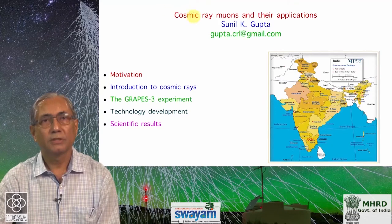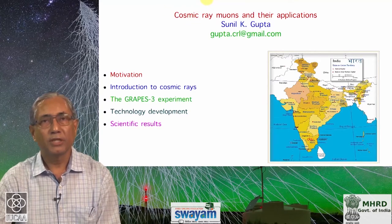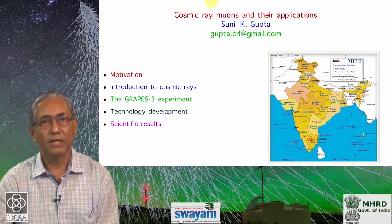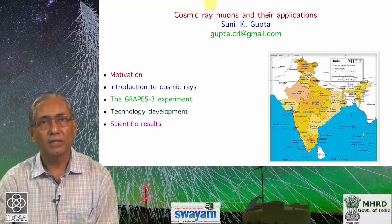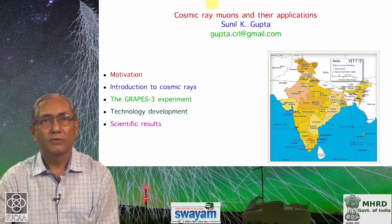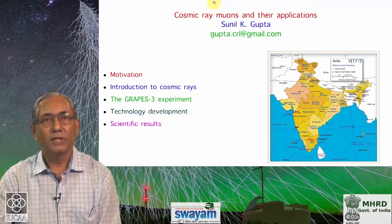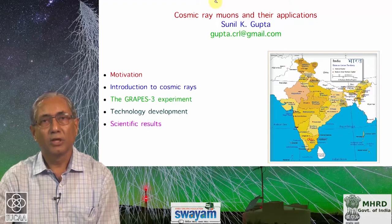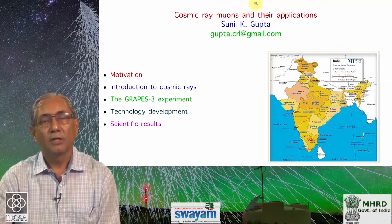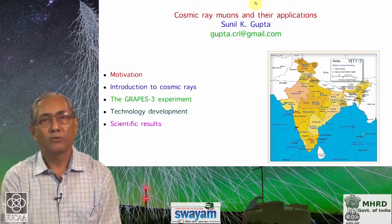We will start off by first presenting a motivation for doing research in this area of science. This will be followed by an introduction to cosmic rays. Physics is basically an experimental science — whatever new knowledge we gain is based on the experiments we perform. As an example of a cosmic ray experiment, I would describe the GRAPES-3 experiment, which is done in Ooty, in the southern part of India, about a thousand kilometers south of Mumbai.